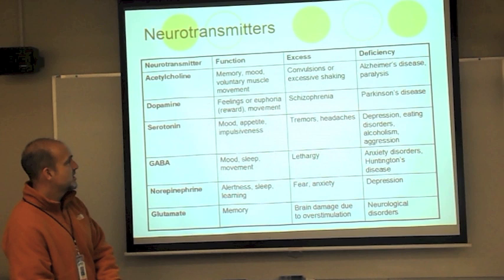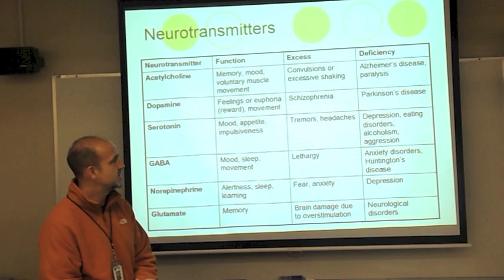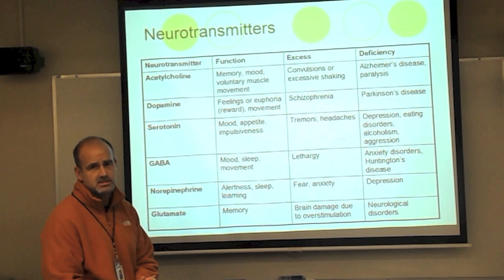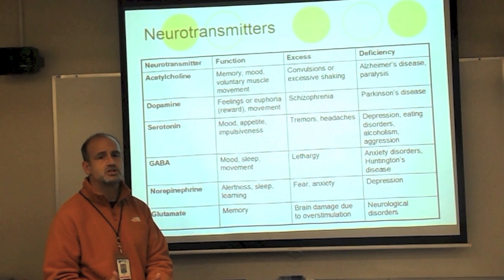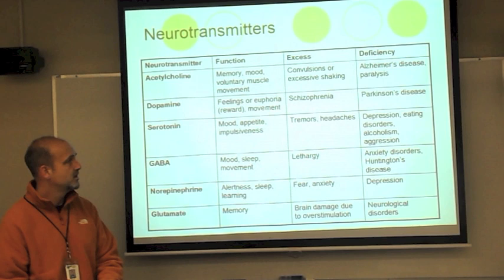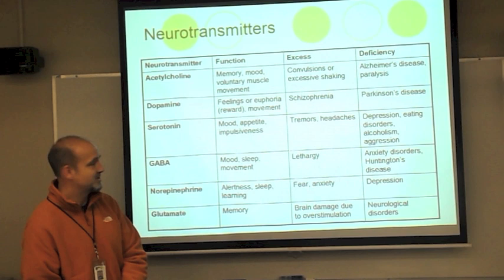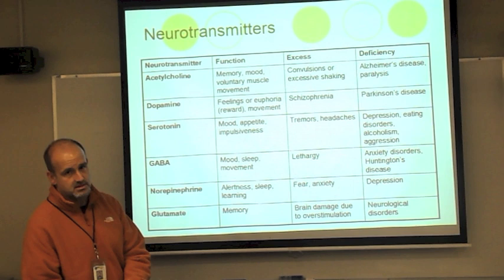Dopamine produces feelings of euphoria and reward — when you feel good, dopamine is being released. Excessive dopamine can lead to schizophrenia; a lack of dopamine leads to Parkinson's disease. A well-known example is Michael J. Fox, whose involuntary hand-shaking is a symptom of Parkinson's. A simple mnemonic: people with excess dope experience schizophrenia, and people who run low on dope experience Parkinson's.